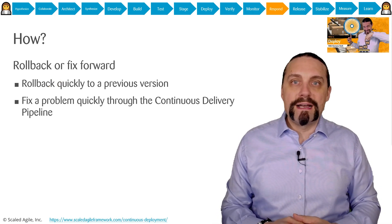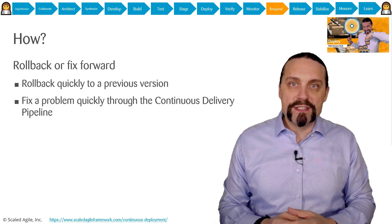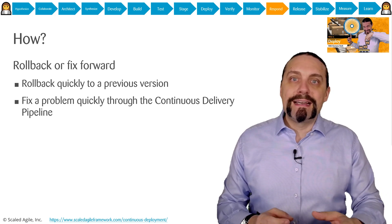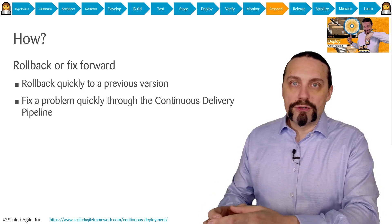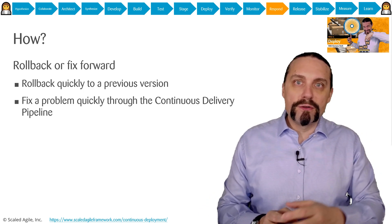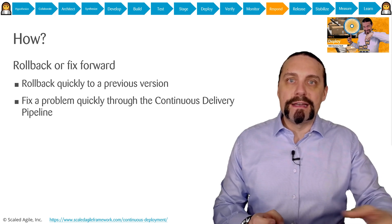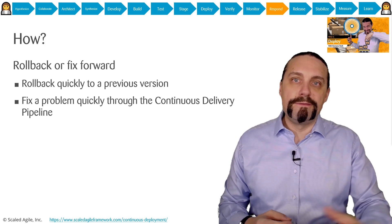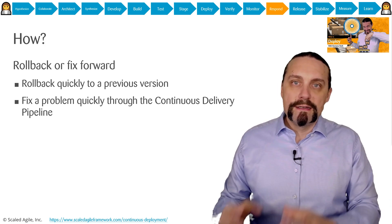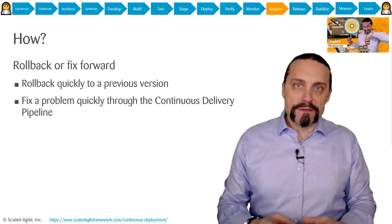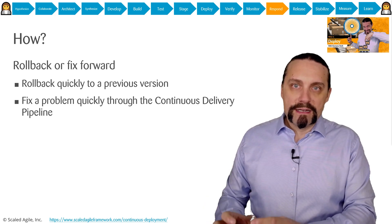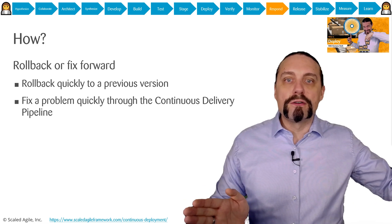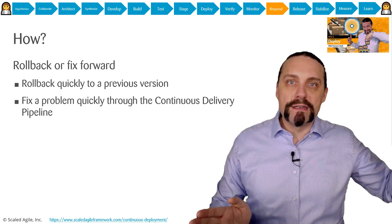Talking about rollbacks — this is one strategy we can use if something happens in production: get the previous running version out of source control and install it again in production. The other strategy is the fix-forward strategy, which means we analyze the problem as fast as possible, create a fix, and deliver it through the full continuous delivery pipeline into production.